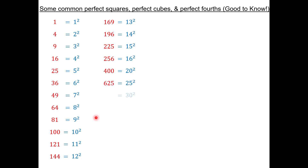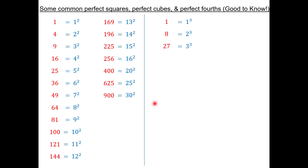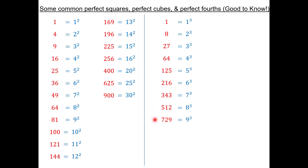Let's move to cubes. 1 times 1 times 1 is just 1. 2 times 2 times 2 is 8. 3 times 3 times 3 is 27. These are more numbers to recognize when they show up — these are all perfect cubes. So if you see these numbers, you can go backwards and find their cubed root fairly quickly.